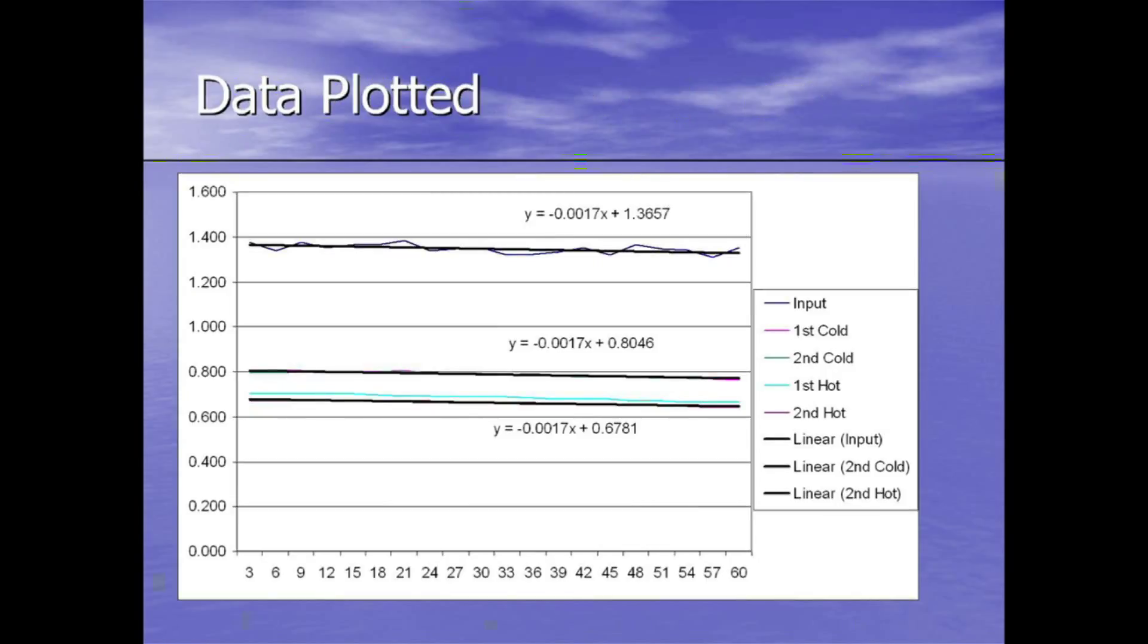The next slide, I took and plotted those numbers, and there's the legend to the right. I also put three trend lines, one on the input and one on each of the second run of both the cold and the hot, because I think there was some cold soak or heat soaking going on that it didn't quite reach equilibrium.